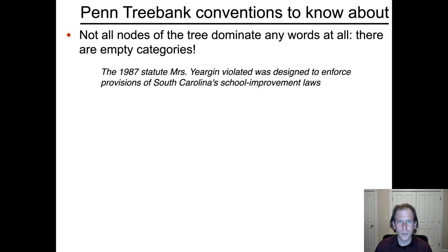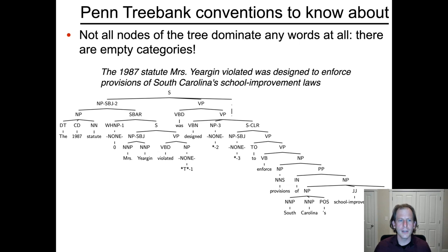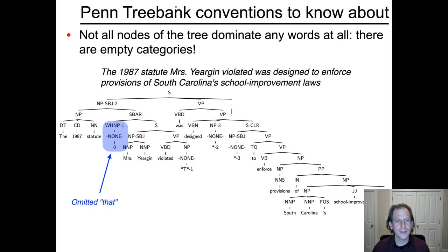You may remember we saw at least an initial motivation for using empty categories to deal with things like extracted relative clauses. Here's a sentence: 'The 1987 statute Mrs. Juergen violated was designed to enforce provisions of South Carolina school improvement laws.' Looking at the Penn Treebank annotation for it, there are empty categories — several nodes that don't dominate any words. For example, one is an omitted 'that': I could have inserted 'that' to read 'the 1987 statute that Mrs. Juergen violated,' which would be perfectly fine.